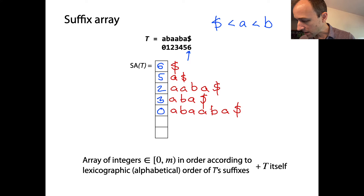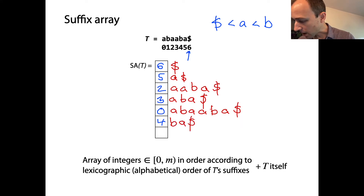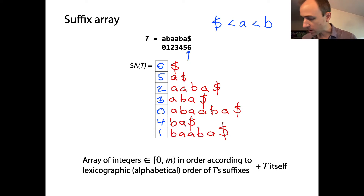Now what's left are the two suffixes that start with 'b'. One starts with 'b, a, a', the other starts with 'b, a$'. Since 'b, a$' is alphabetically the smaller one, I'm going to put a four there. And then finally we have one, for 'b, a, a, b, a$'.